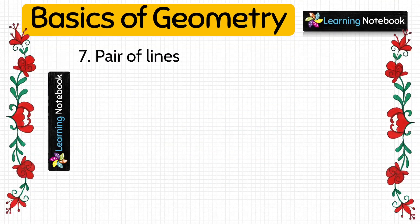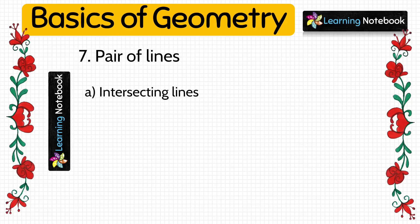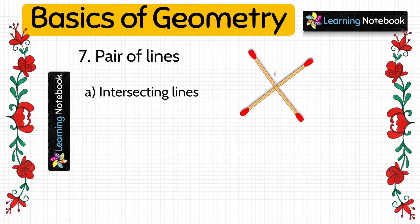The next important concept of geometry is pair of lines. The first one is intersecting lines. If two lines have a common point, they are called intersecting lines. Let's paste four matchsticks to form intersecting lines L and M as shown here; these two lines are meeting at a common point called O.